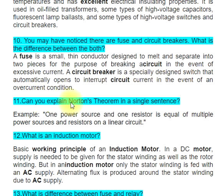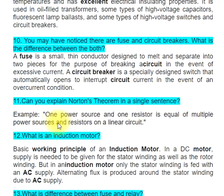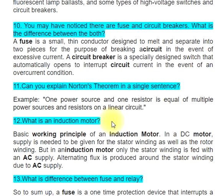Question 11: Can you explain Norton's theorem in a single sentence? One power source and one resistor is equivalent to multiple power sources and resistors on a linear circuit.